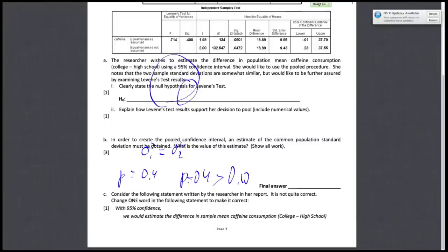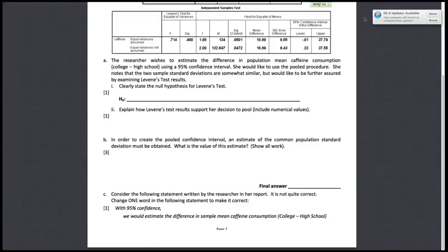Next part, Part B. In order to create the pooled confidence interval, an estimate of the common population standard deviation must be obtained. What is the value of this estimate, and show all work.